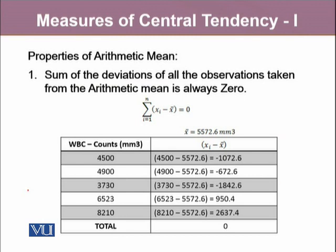Arithmetic mean also has few mathematical properties. The first one among those is that sum of the deviation of all the observations taken from the arithmetic mean is always going to be zero. If we know from the previous data that our arithmetic mean is 5,572.6 and if we subtract this average from each cell count, we will see that we are going to get some numbers and if we add them all up, the sum is going to be equals to zero.